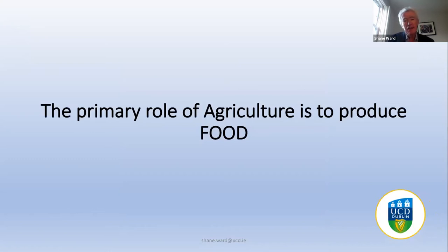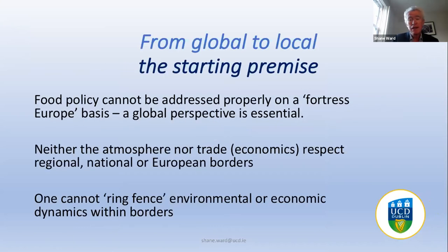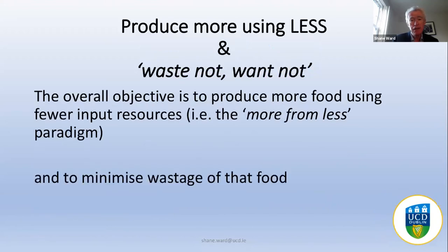I want to outline the premise on which I present this overall perspective. First of all, the primary role of agriculture is to produce food, not to produce energy. If you look at the global demand and requirement for food, not just now but into the future, the primary role of agriculture has to be to produce food. Food policy cannot be addressed on a fortress Europe basis — a global perspective is essential, because neither the atmosphere nor trade respects borders. The overall concept must be to produce more food using less resources, the waste not, want not concept.